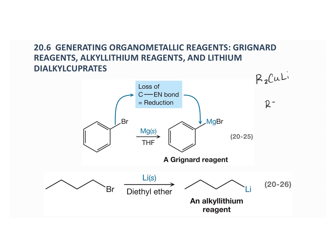Maybe the burning question in your heart is: how are these organometallic reagents made? Both a Grignard reagent and an alkyl lithium reagent can be generated directly from the corresponding alkyl halide. We can make these from an alkyl halide, alkenyl halide, or aryl halide.